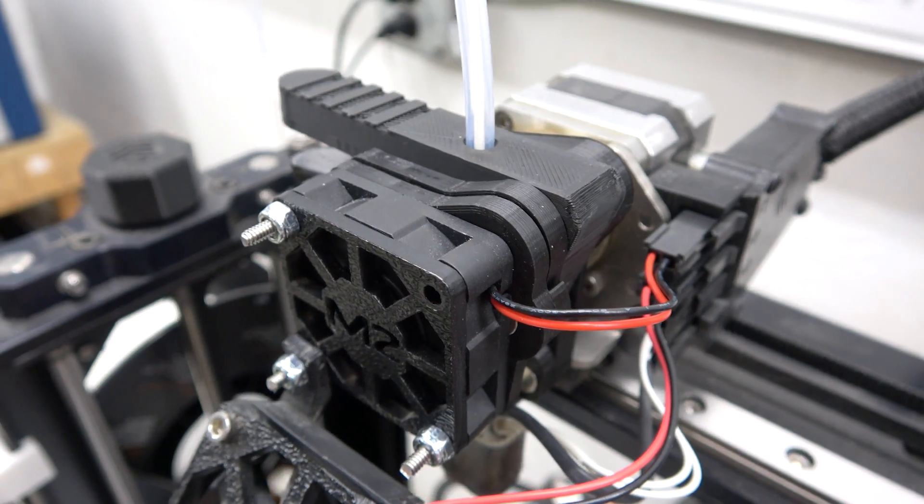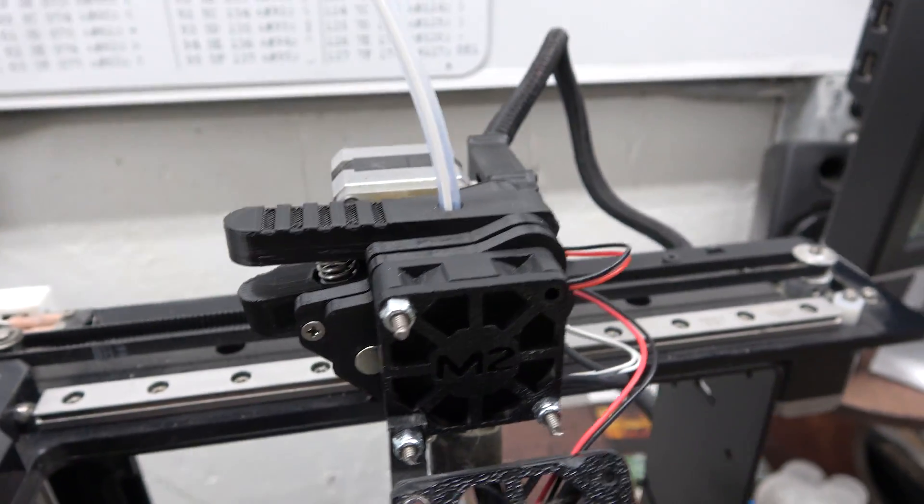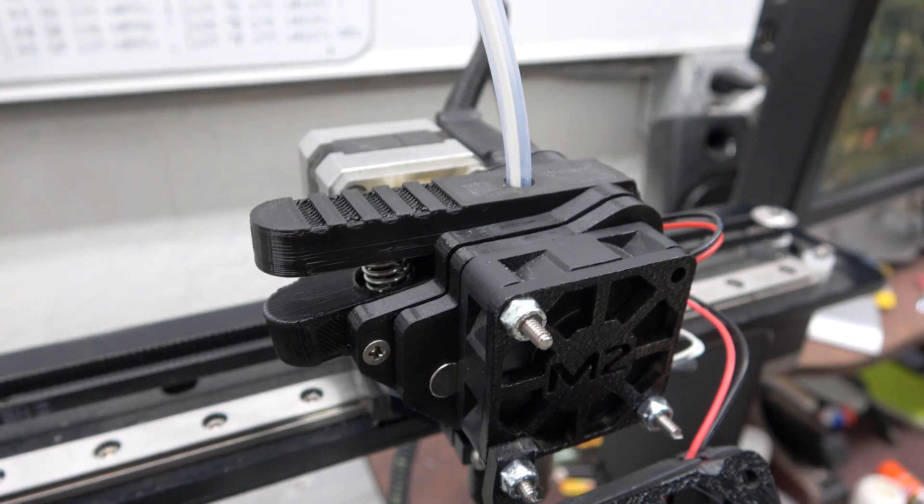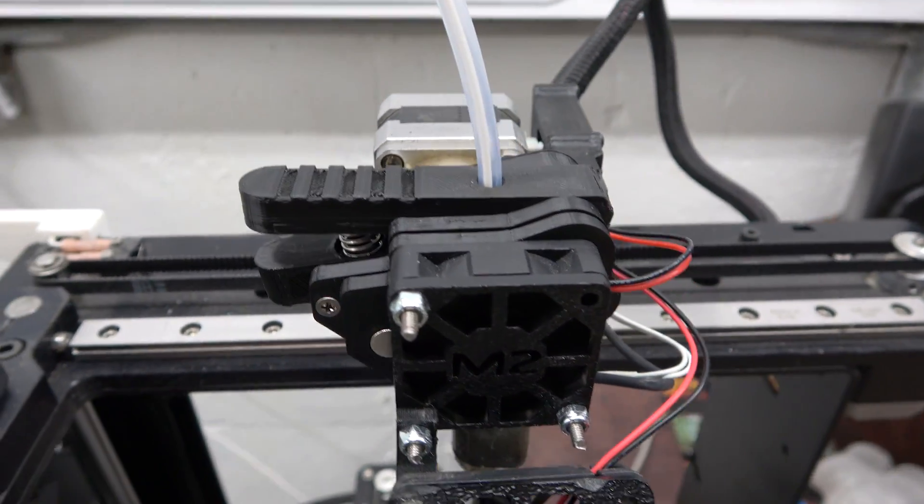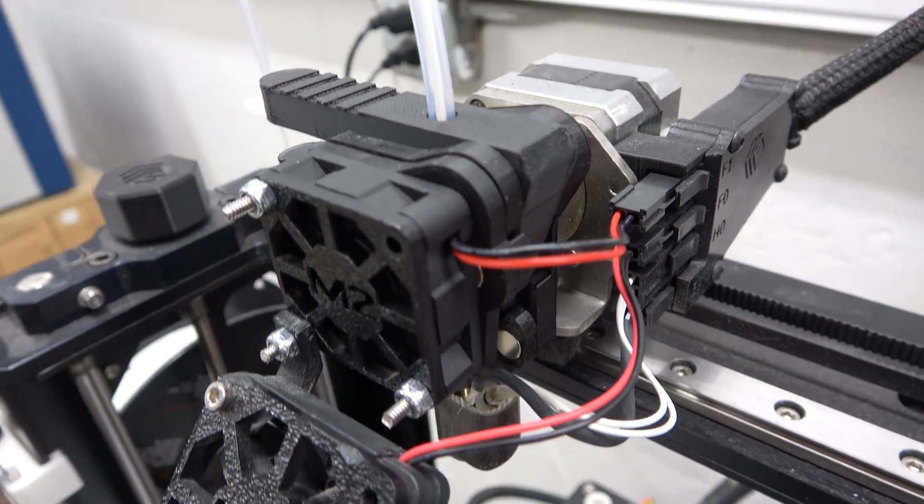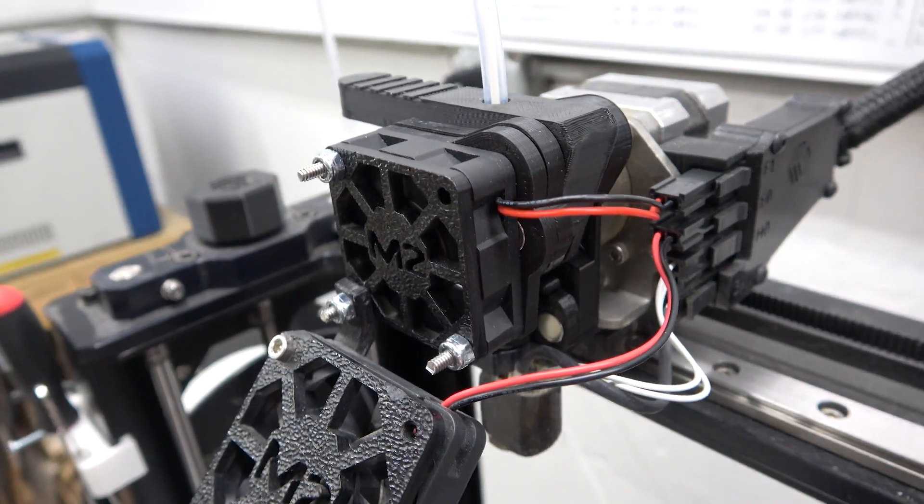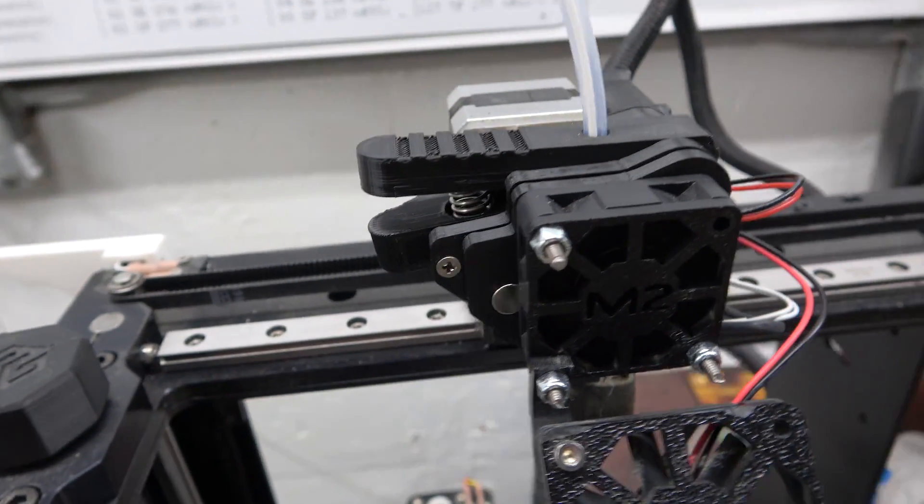Well there you have it. My own custom designed, super grippy, easy magnet access, MakerGear M2 redesigned extruder print head. What do you think? Would you like to try your own? Well go on Thingiverse and get the files and let me know how it works for you.